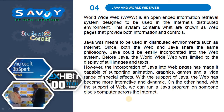Java and World Wide Web: The World Wide Web is an open-ended information retrieval system designed to be used in the Internet's distributed environment. This system contains what are known as web pages that provide both information and controls. Java was meant to be used in distributed environments such as the Internet. Since both the web and Java share the same philosophy, Java could be easily incorporated into the web system. Before Java, the World Wide Web was limited to the display of still images and text. However, the incorporation of Java into web pages has made it capable of supporting animation, graphics, games, and a wide range of special effects. With the support of Java, the web has become more interactive and dynamic.